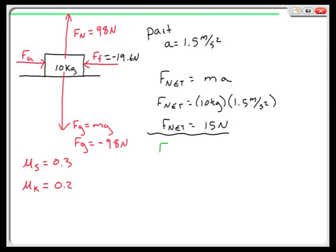So my sum of forces will look like this: I have the applied force that I'm trying to figure out, what is my applied force in order to achieve this acceleration, plus the friction force that's going to have a minus sign associated with it. 15 Newtons that I saw from before is going to be equal to my unknown applied force minus 19.6 Newtons. I can solve for that and find that the applied force would have to be 34.6 Newtons, and that's my answer.